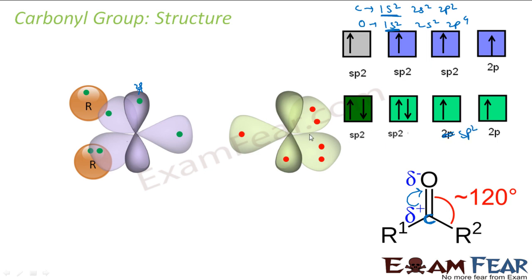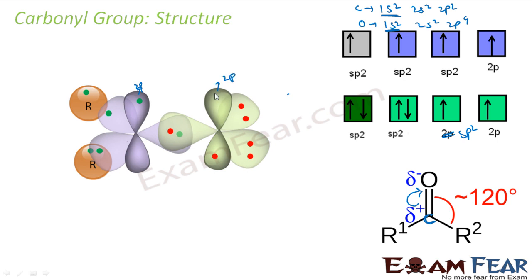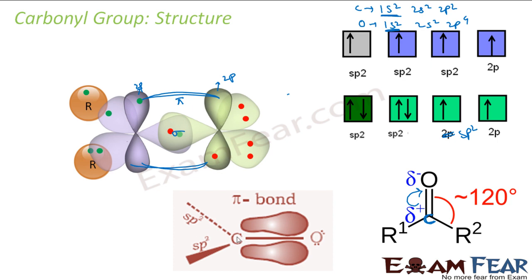So three sp2 and one 2p. This is my 2p — the horizontal one. Now what happens is this forms a bond. This is one sigma bond, and this is one pi bond — this will overlap. And thus if you see, this is a double bond: one sigma, one pi. So this is my sigma bond and this is my pi bond. The pi bond, if you see, is like a sandwich. This is my carbon and this is my oxygen. So this is a sigma bond and this is a pi bond. This is the typical structure of a carbonyl group.